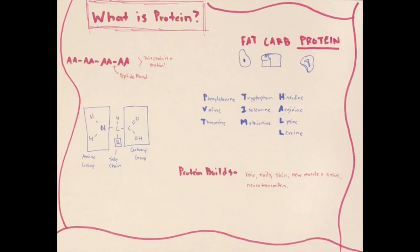Proteins are made up of amino acids that are linked together by peptide bonds. They contain an amine group, a carboxyl group, and a side chain that distinguishes that amino acid.